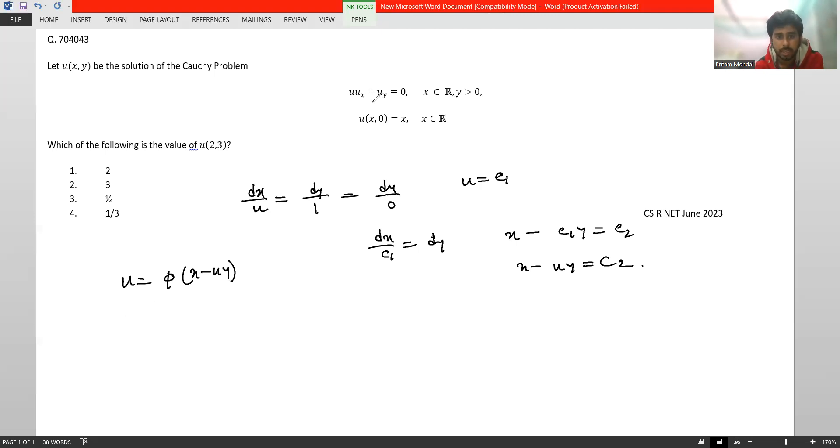Now, using the given condition u(x,0) = x, we get - u is a function of x and y obviously. Therefore, u(x,0) = x, which is φ(x) only.